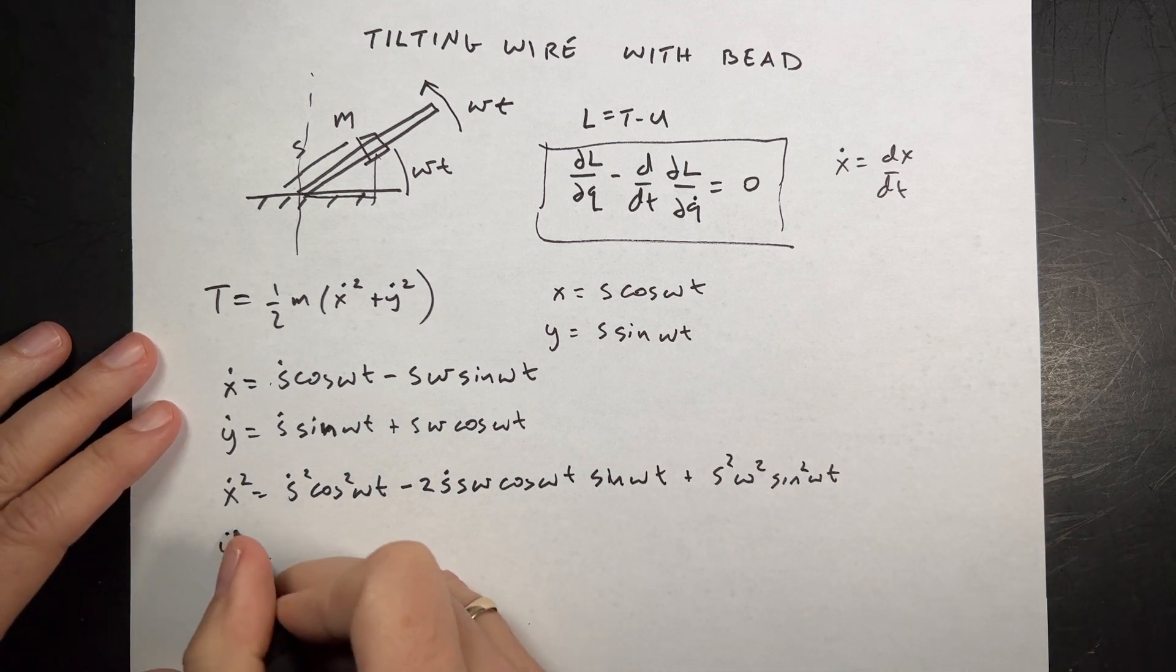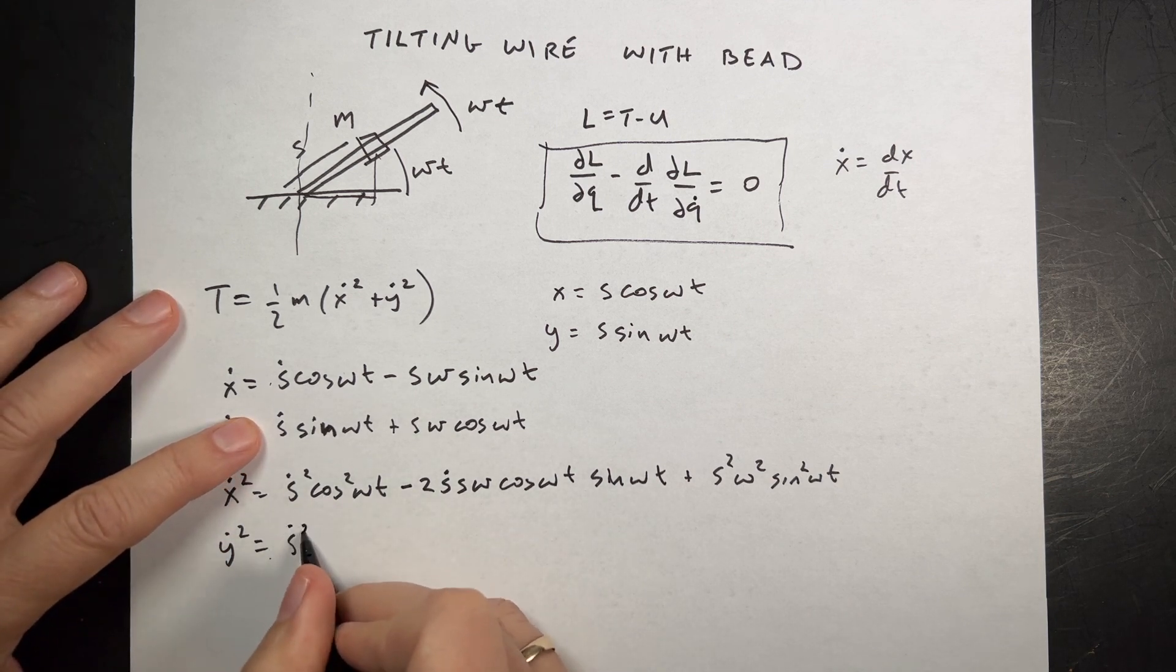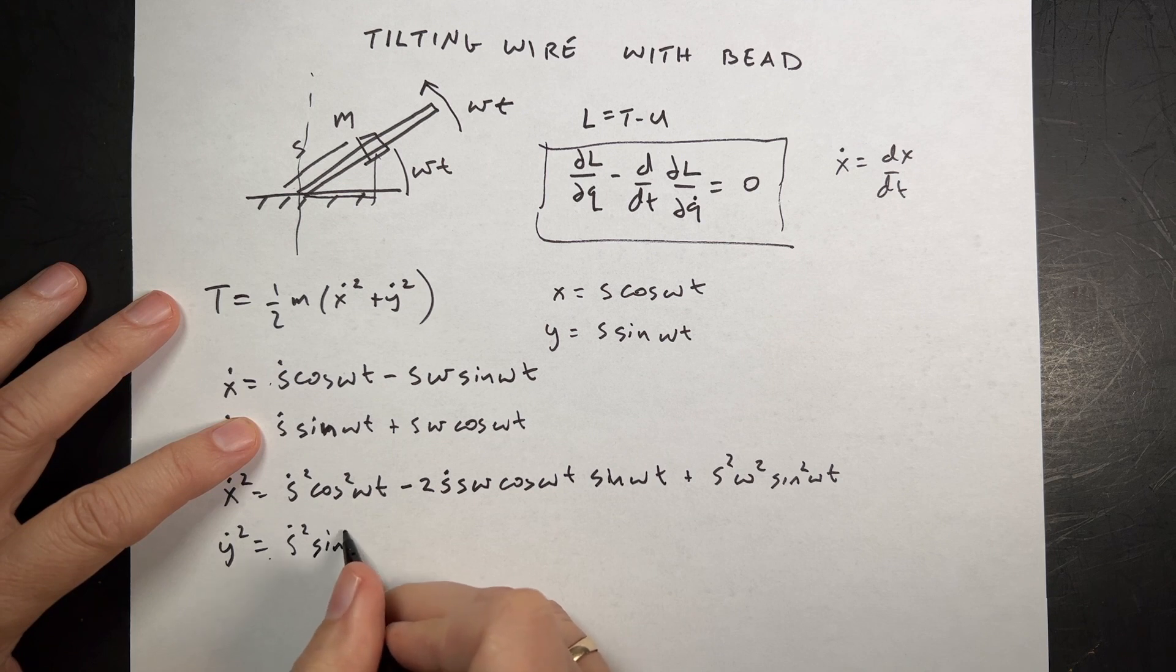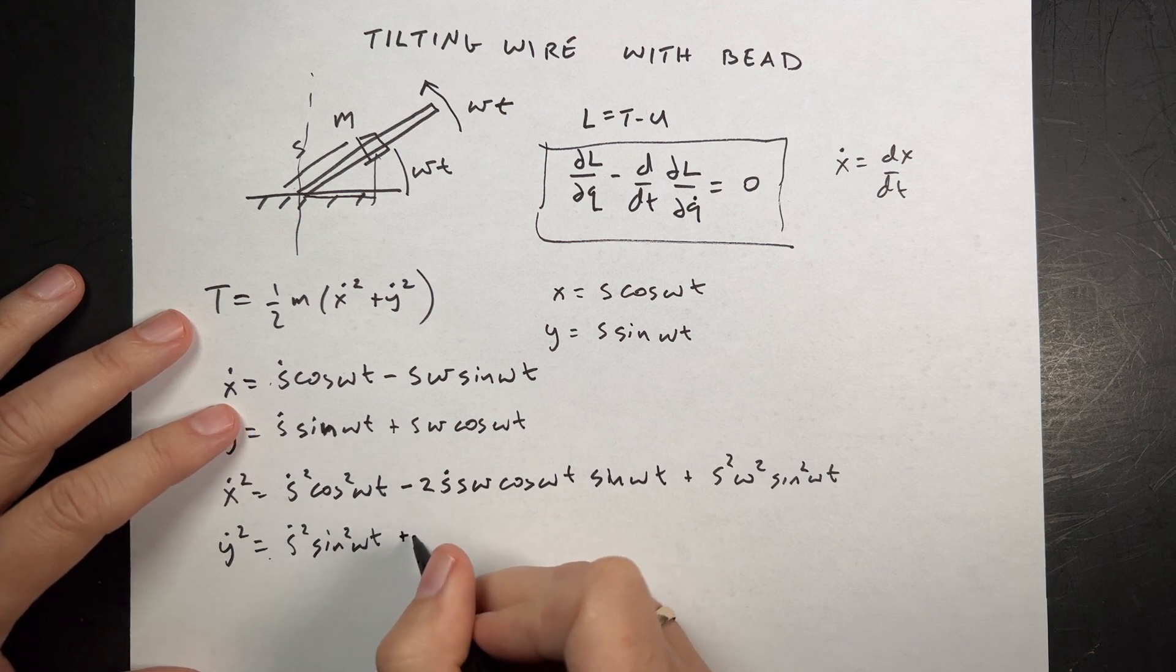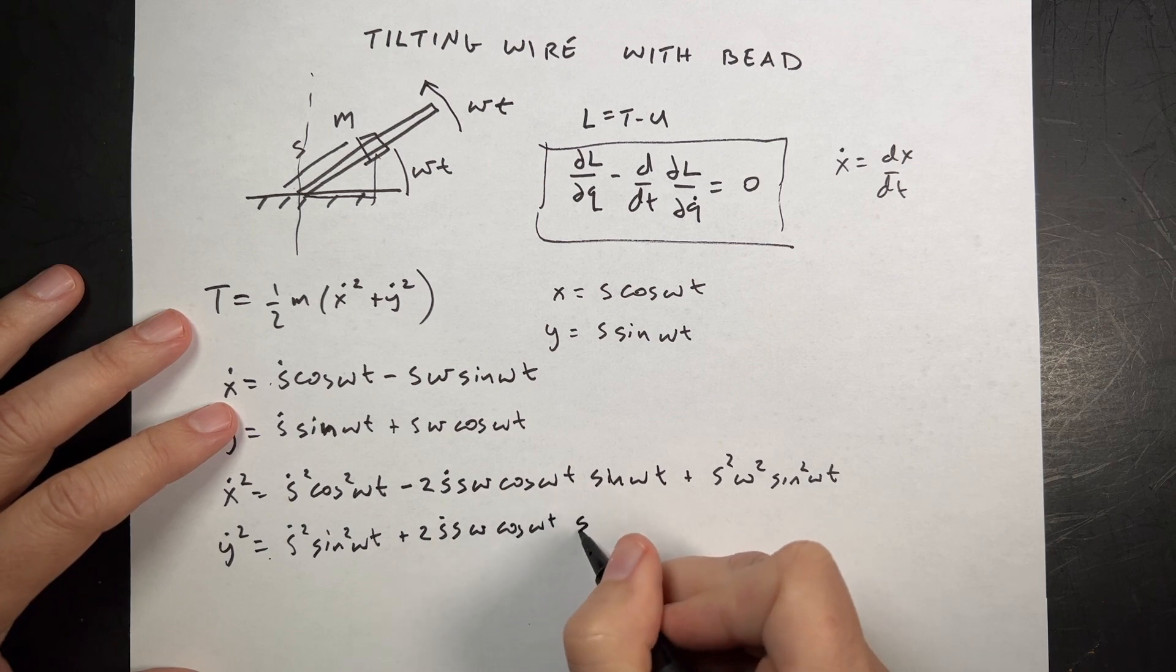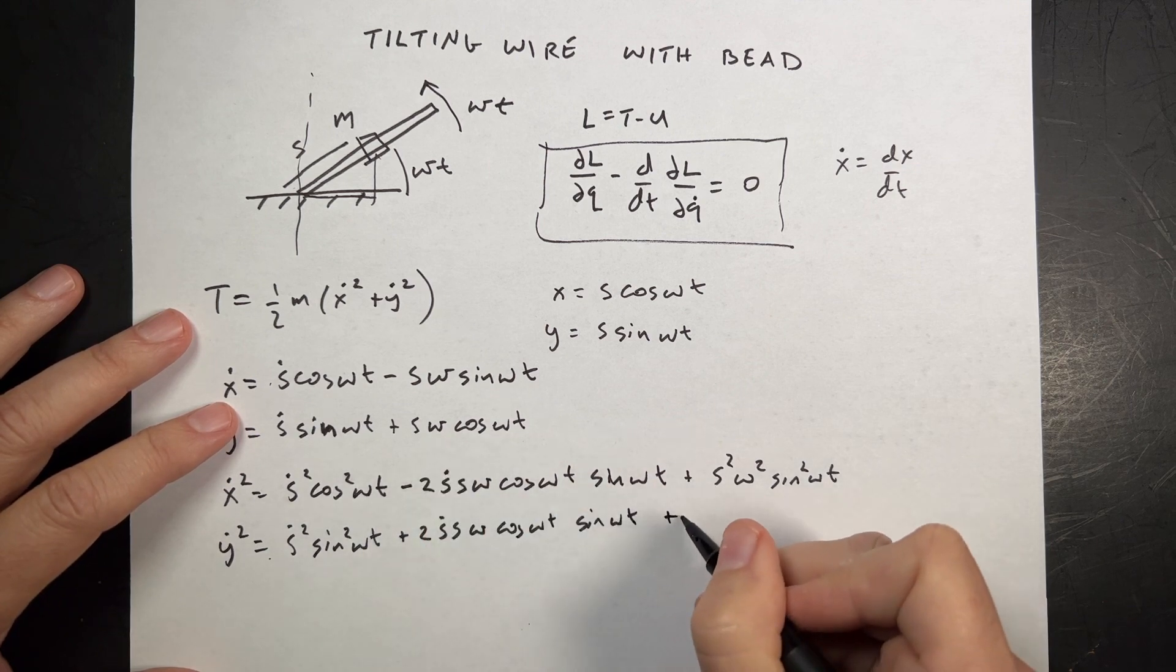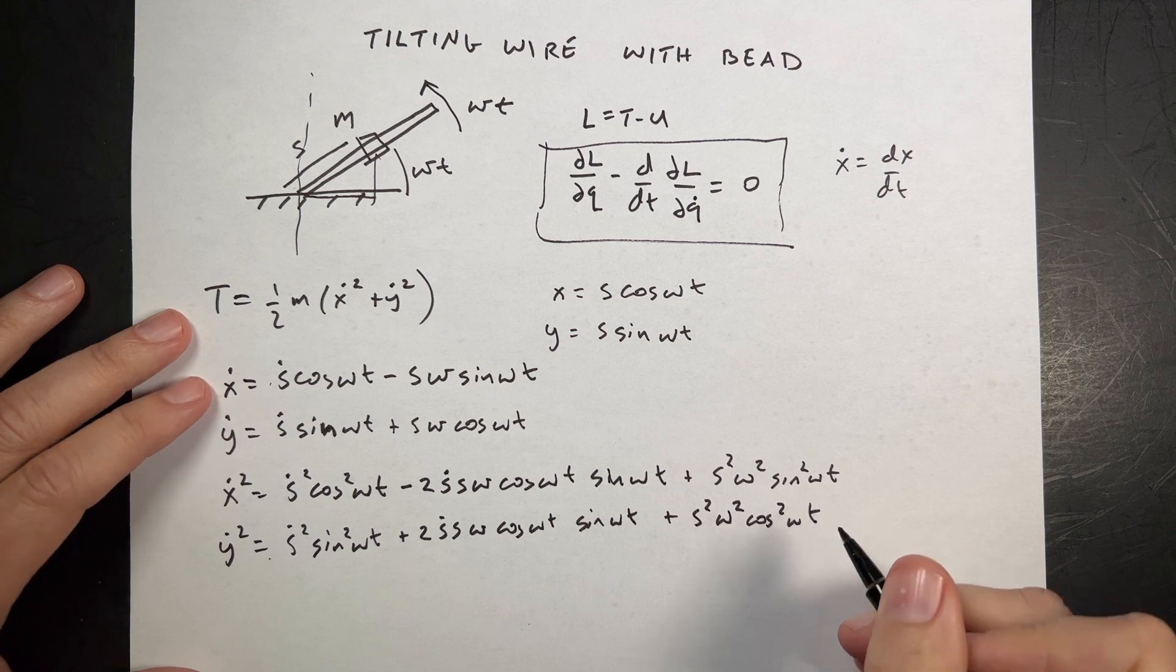Now let's do the same thing for y dot. So that's going to be equal to S dot times sine omega t. And then I'm going to get plus S omega cosine omega t. So now I want to square both terms and add them together. So X dot squared is going to be equal to this squared. So I have two terms. So I'm going to get this term squared. S dot squared cosine squared omega t. And then I'm going to get the cross term. I'm going to get two of those. So it's going to be minus two S dot S omega cosine omega t sine omega t.